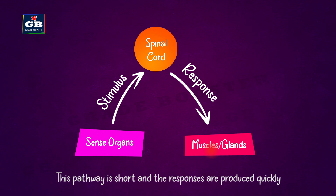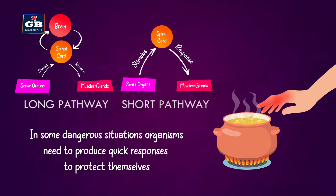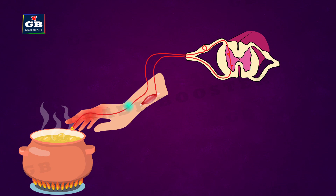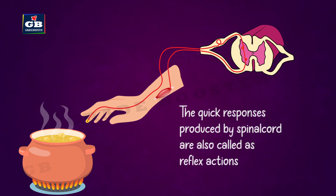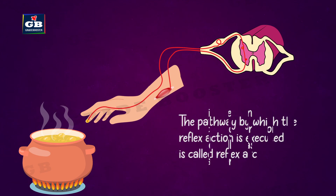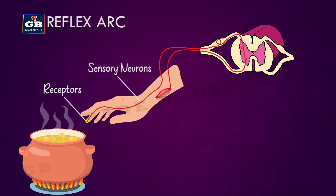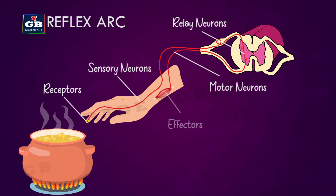In some situations, organisms need to produce very quick responses to protect themselves from dangerous stimuli. In such cases, they take the short pathway — these responses reach the muscles and cause immediate movements. These quick responses are called reflex actions. The pathway by which a reflex action is executed is called the reflex arc, whose components are receptors, sensory neurons, relay neurons, motor neurons, and effectors.